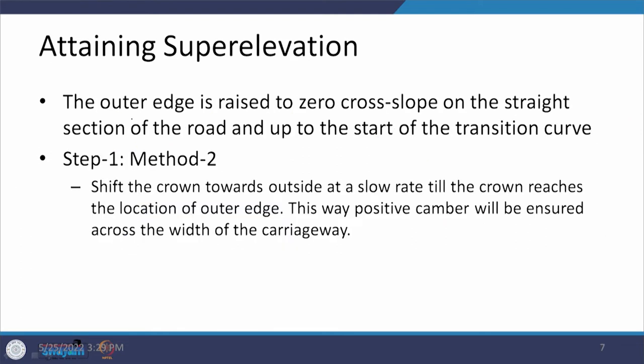In method two — shifting the crown outwards — if a vehicle is at the edge where the crown has shifted, one wheel may be touching the surface on one side while the other wheel is in the air, creating a possibility of the vehicle toppling. Vehicles will always try to remain towards the inner side rather than the outer side to steer safely. The outer edge is raised to 0 slope on the straight section up to the start of the transition curve.